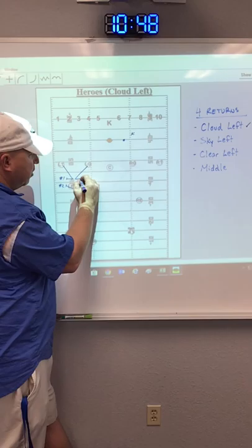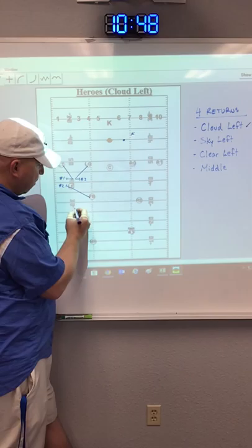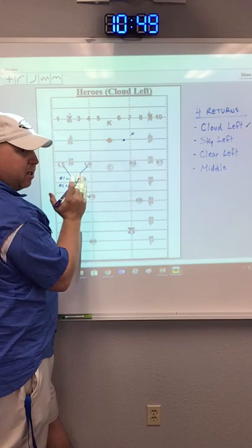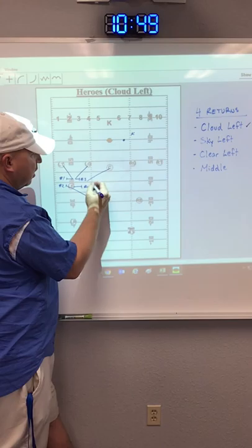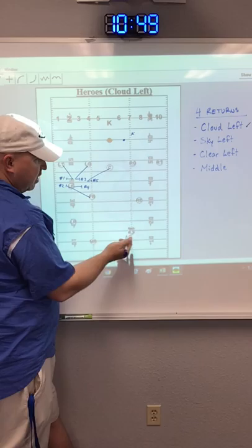My left guard is still dropping to the top of the numbers, and he's going to flip the hips and seal three to the inside. My left end, now, he may not be coming up at all. He may just be lateral here, but he's still going to catch number four and run to the inside. The center is still dropping to the hash, flipping his hips, and keeping number five to the inside.